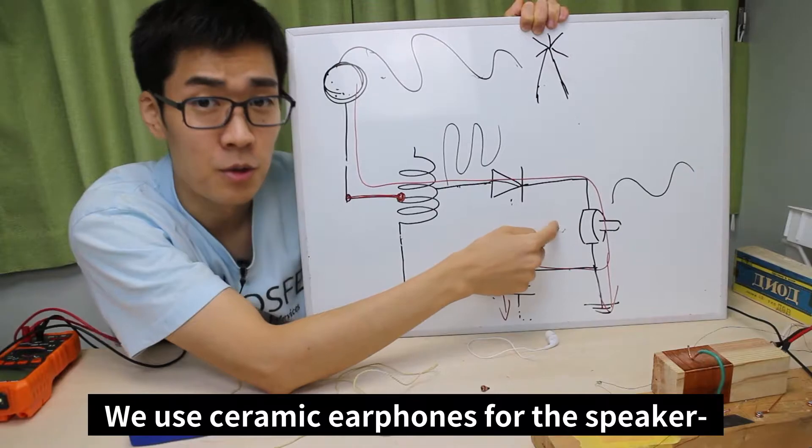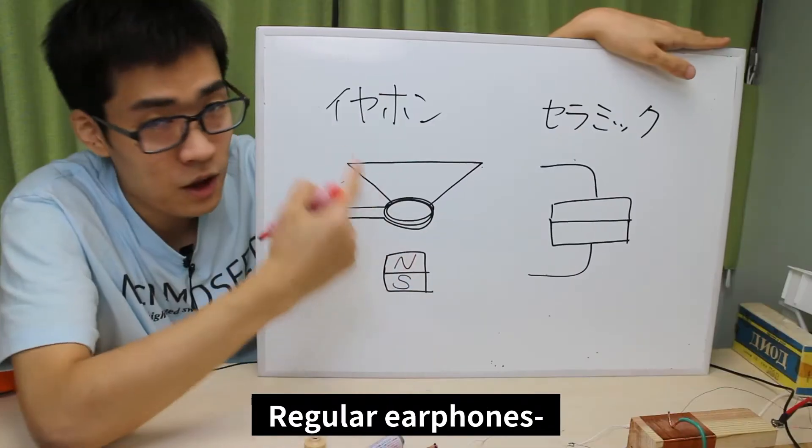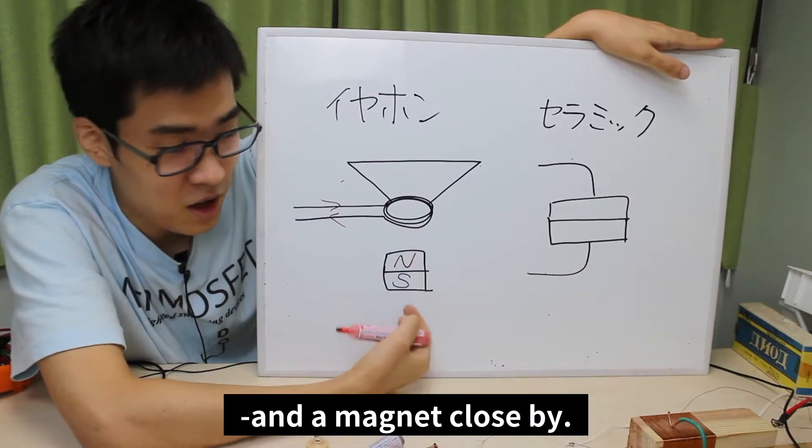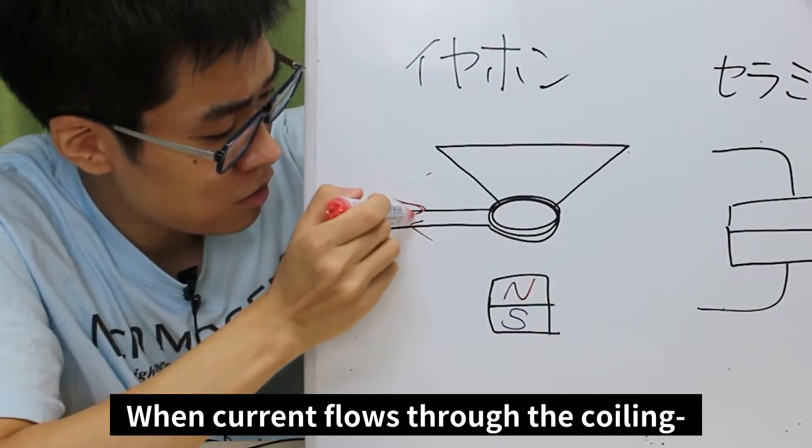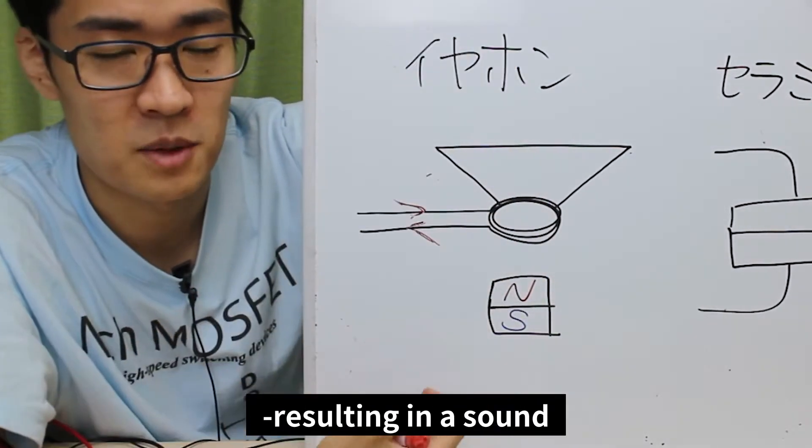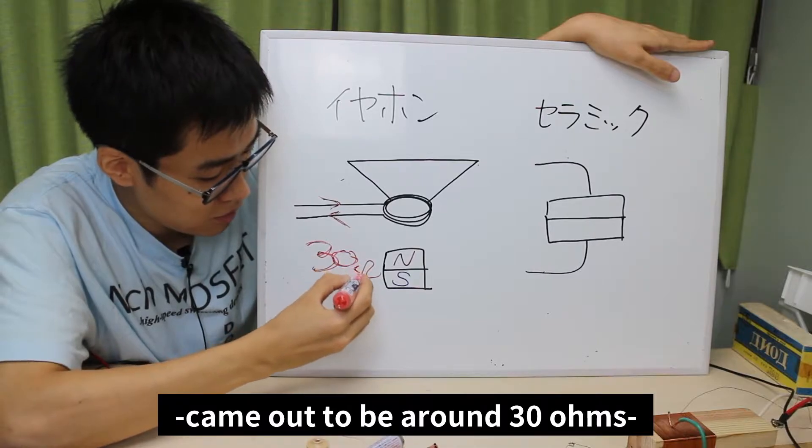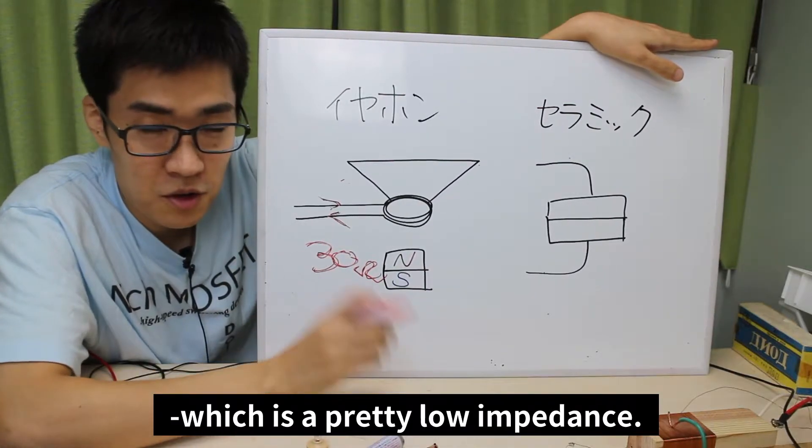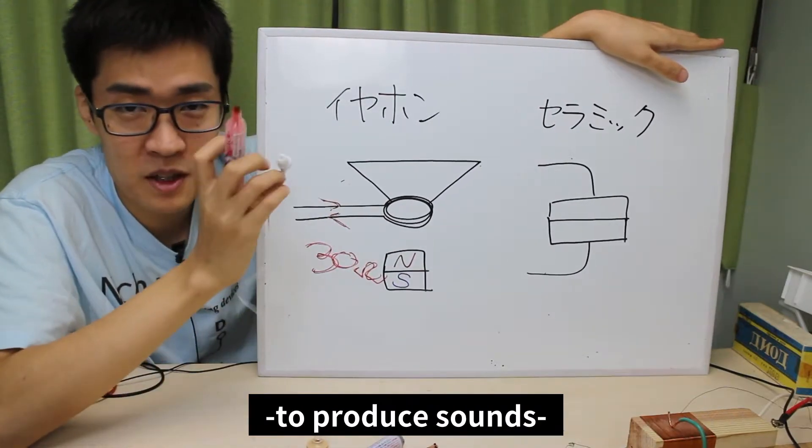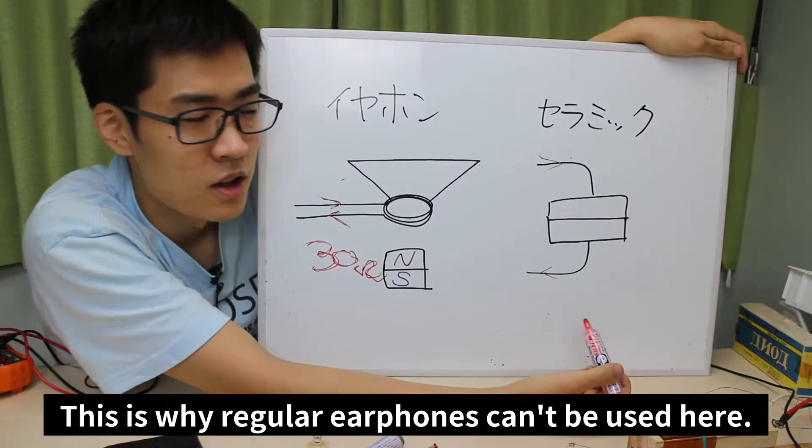We use ceramic earphones for the speaker because regular earphones cannot be used here. Regular earphones have coils that are wound all around the diaphragm and a magnet close by. When current flows through the coiling, the magnet becomes an electromagnet, making the diaphragm vibrate, resulting in a sound. The impedance of these earphones is around 30 ohms, which is a pretty low impedance. It's impossible to use electric power received by the antenna to produce sounds from the speaker. This is why regular earphones can't be used here.